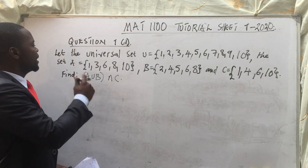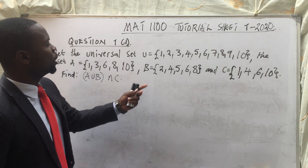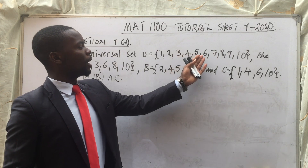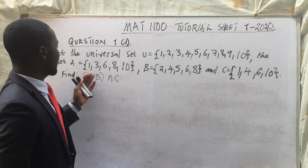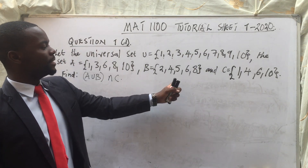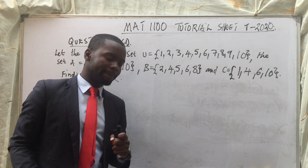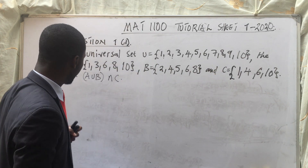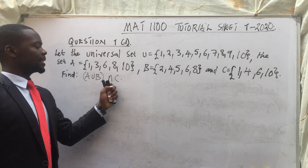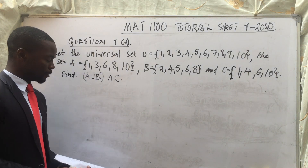So the question reads: let the universal set U be {1, 2, 3, 4, up to 10}. We are given set A, set B, and set C. The question is saying: find A union B, intersection C.